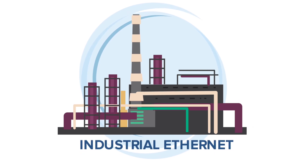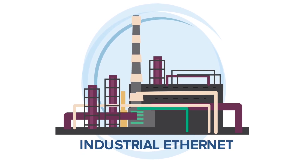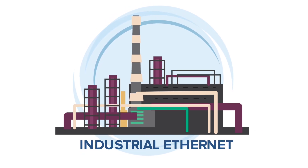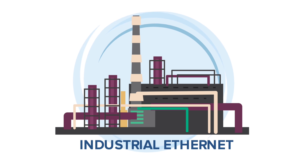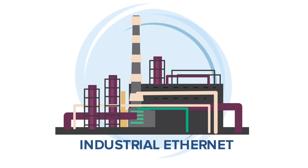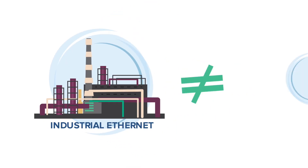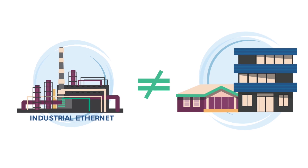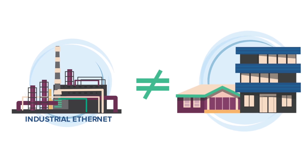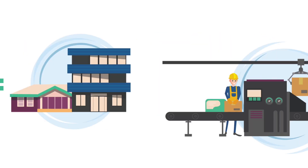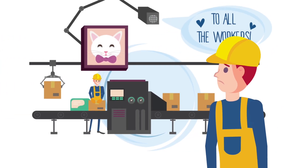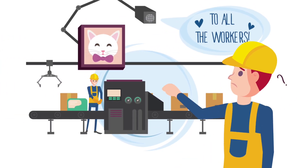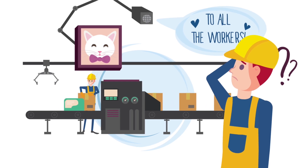Today Ethernet is not only suitable for homes and offices, but also for use in industry. It's called industrial Ethernet. Industrial environments are very different from homes or offices — browsing the web for cat videos is not the same as running a multi-million dollar factory.